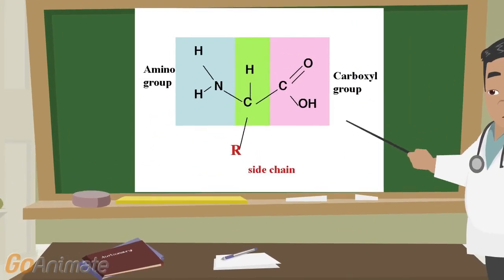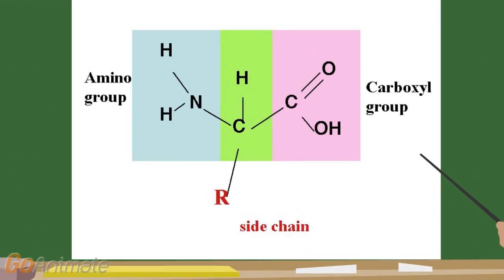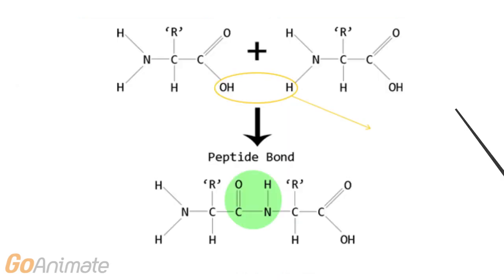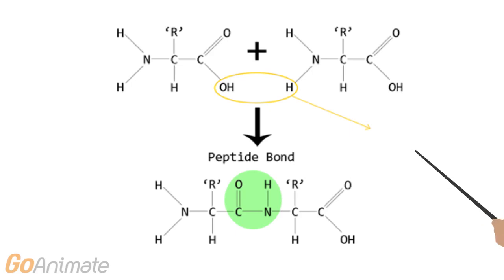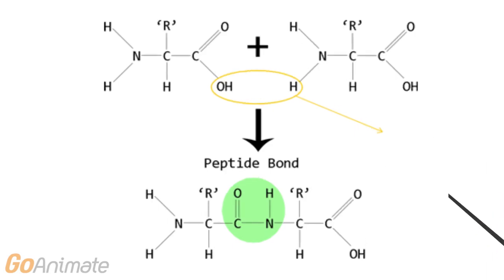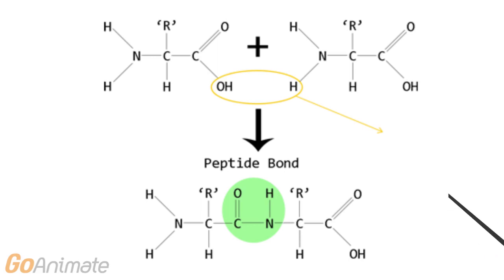The composition of a primary structure consists of a central carbon atom surrounded by an amino group, a carboxyl group, and a side chain represented by an R. During protein folding of a primary structure, the amino group reacts with the carboxyl group of another molecule to form a peptide bond. This reaction results in the donation of an OH from the carboxyl group and an H atom from the amino group.